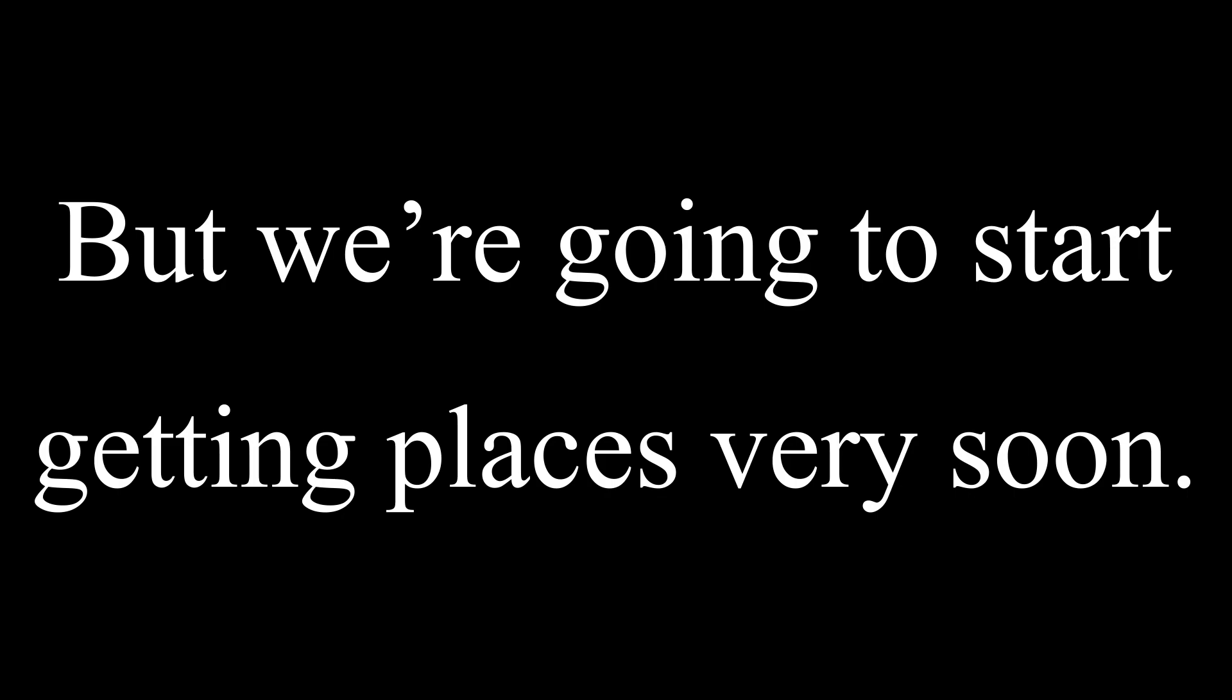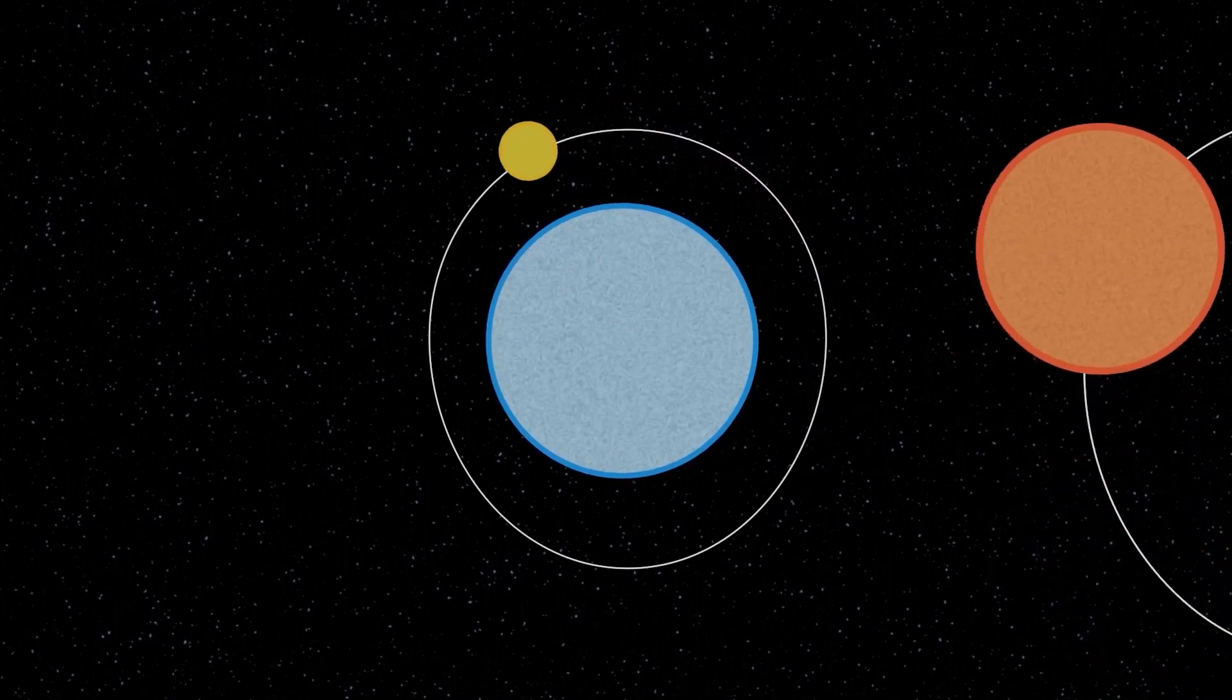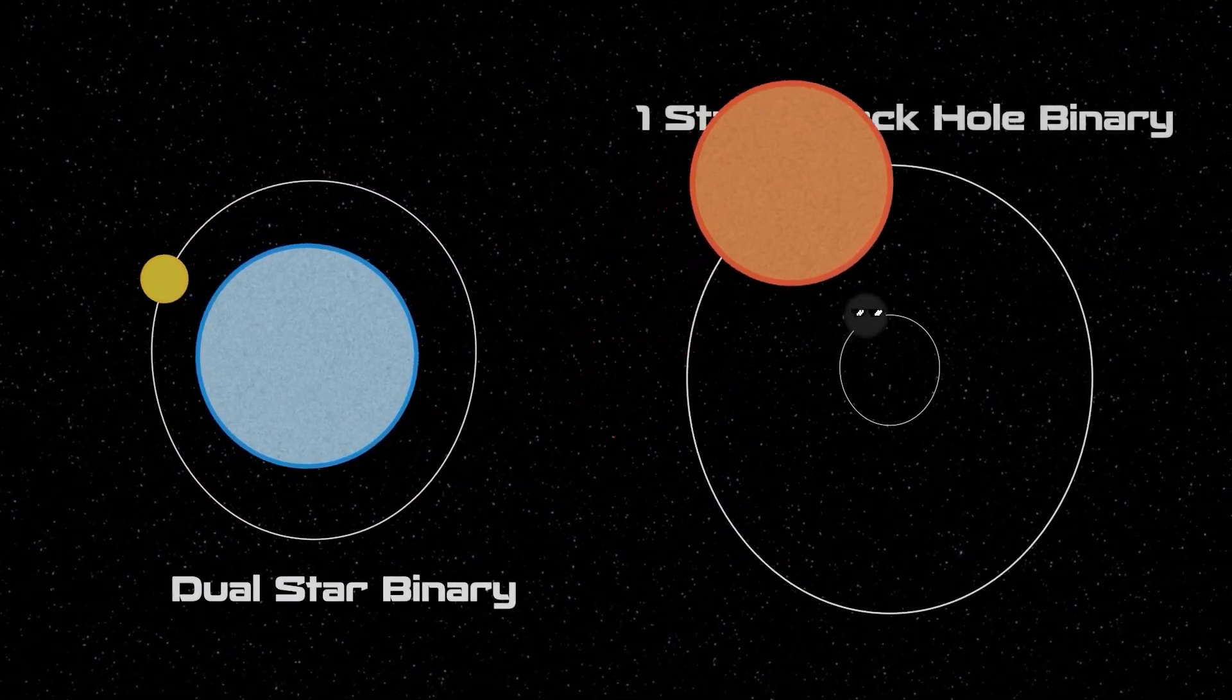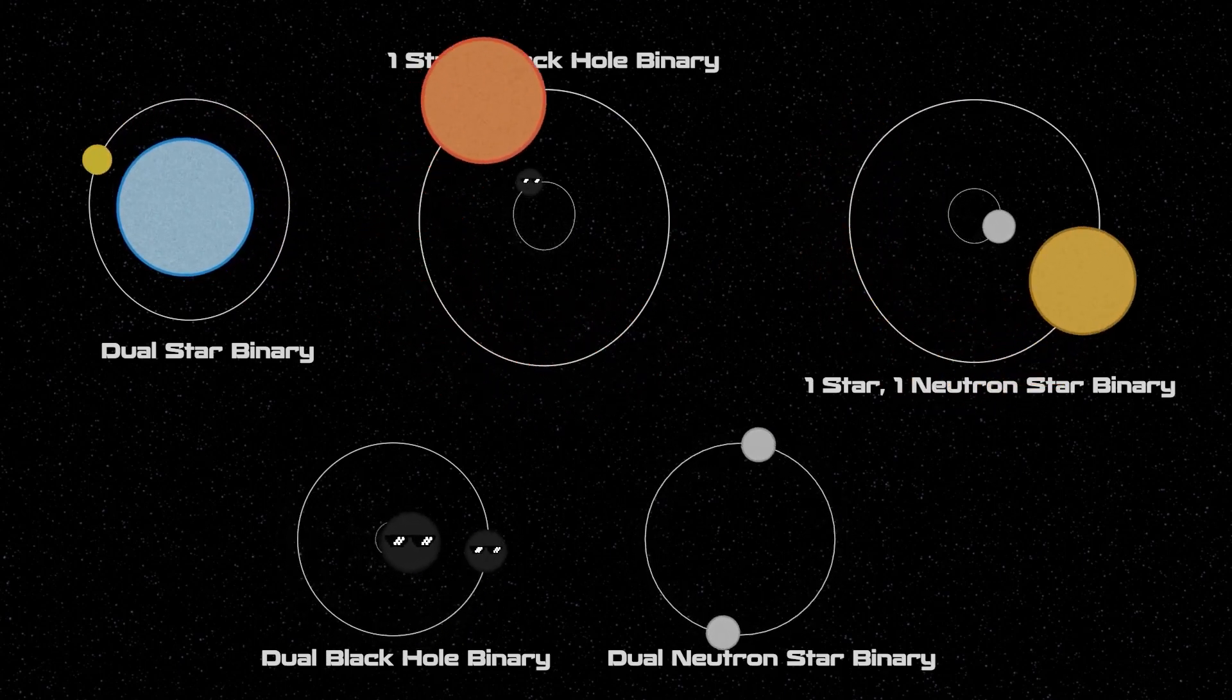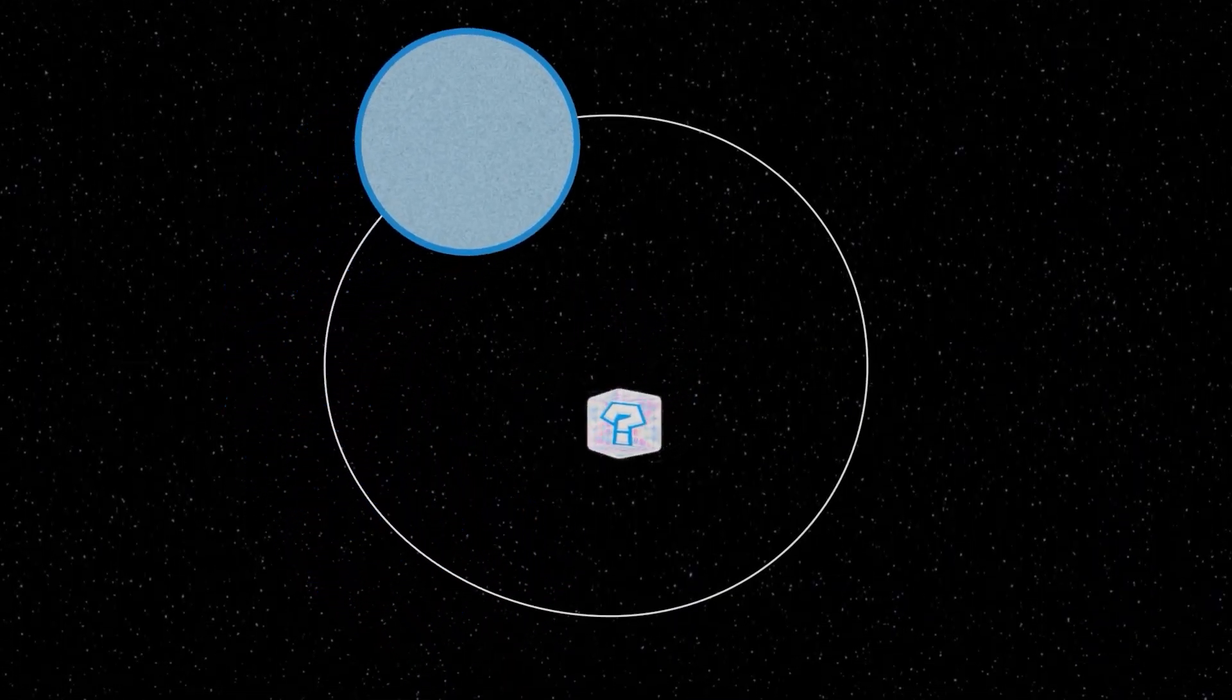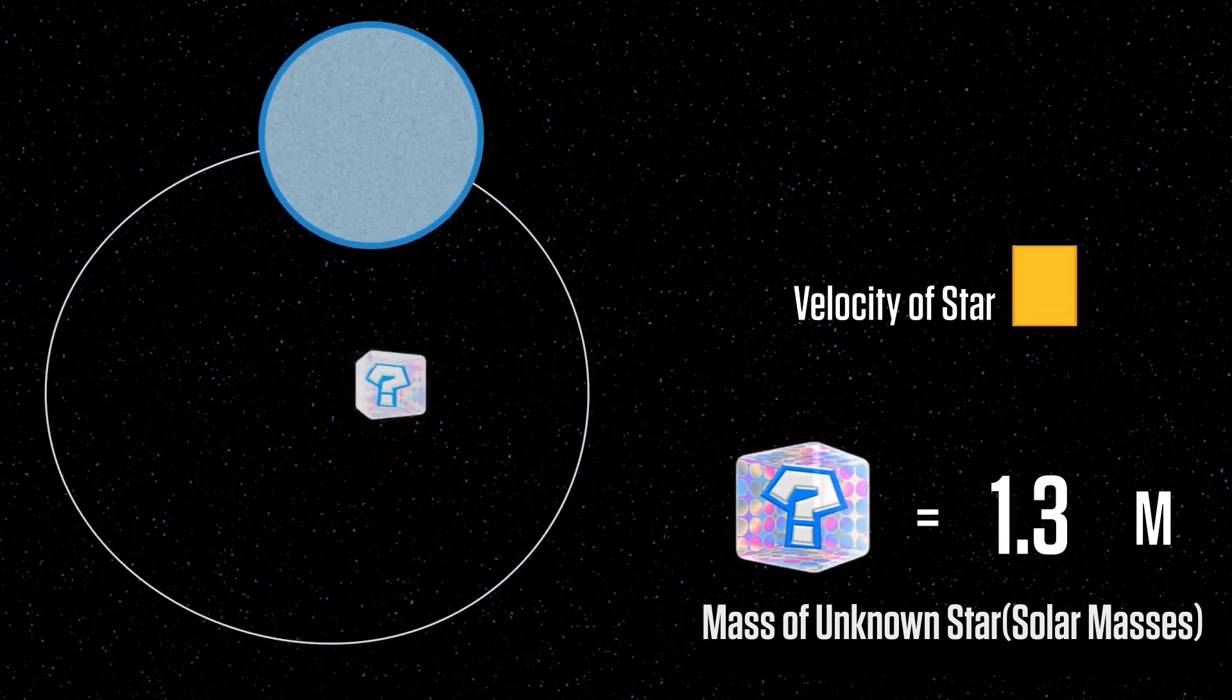So we're off to a slow start, I know, but we're going to start getting places very soon. The next method was proposed by Zeldovich himself, which involved carefully observing the movements of binary star systems. A binary star system is when there are two stars that orbit around each other, and these two stars can be a mix between massive stars and small stars, a star and a black hole, a star and a neutron star, even two black holes or two neutron stars would be considered a binary system. But what Zeldovich wanted to focus on were the binary systems where only one star was visible, but we can clearly observe that it was orbiting an unseen star. What he wanted to do was measure the speed of the star as it orbits the mystery star.